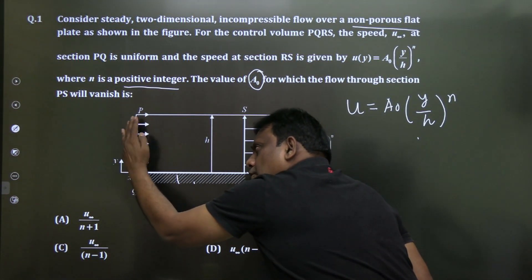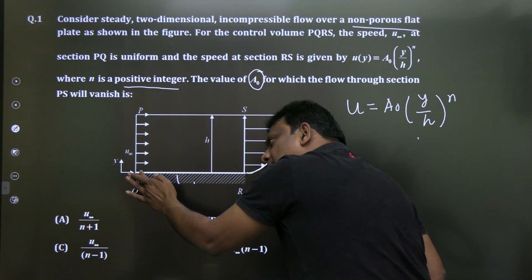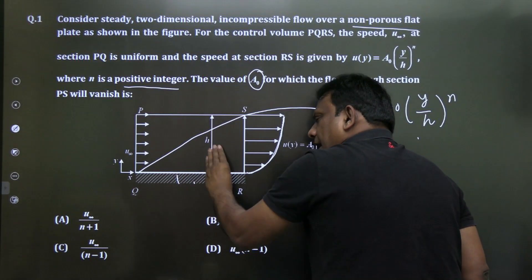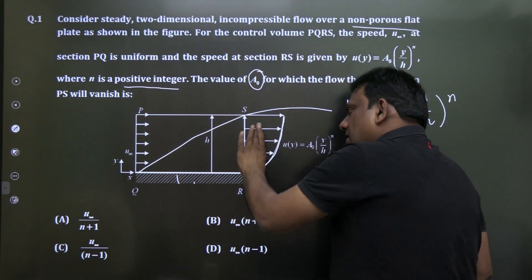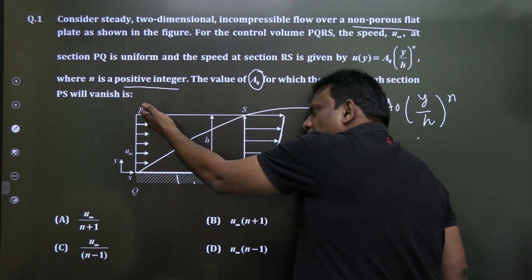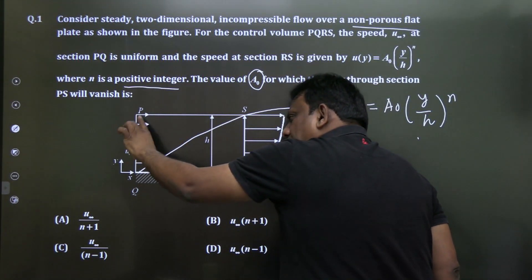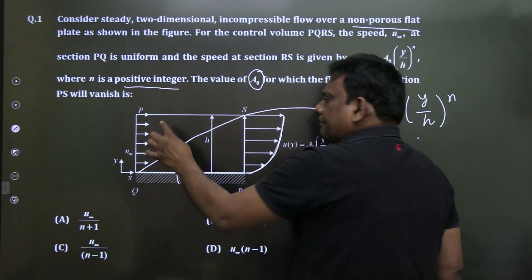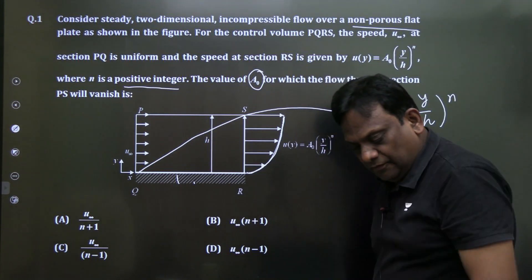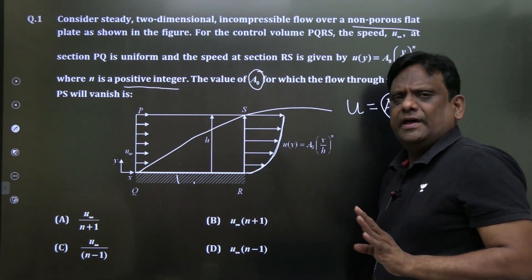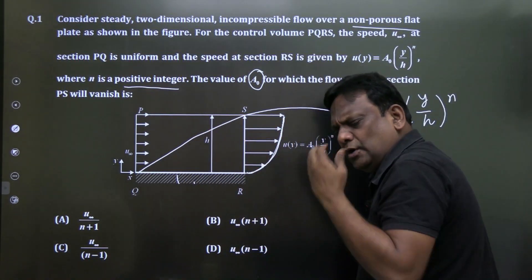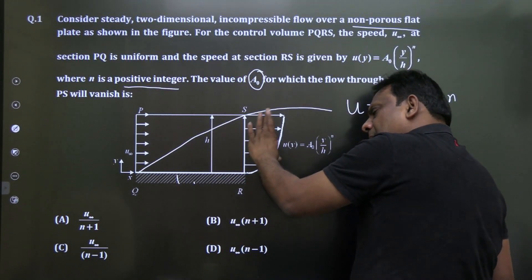The fluid is entering, and once the boundary layer grows, due to the reduction in velocity within it, there is a reduction in mass flow rate. The rest of the fluid will flow through section PQ. If I take the control volume PQRS, he's asking: what value of a₀ makes the flow through PS vanish? The concept is simple.